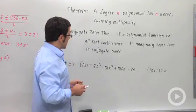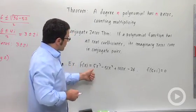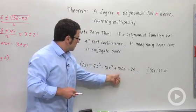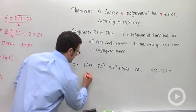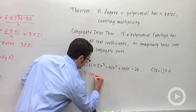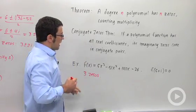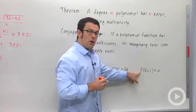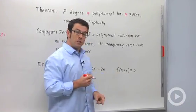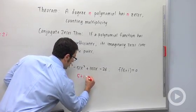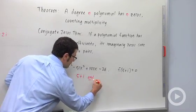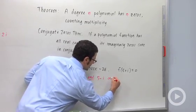So let's take a look at an example. Here I have a third degree polynomial. A degree 3 polynomial by this theorem is going to have three zeros. And if I know that f of 5 plus i equals 0, then I know that 5 plus i and 5 minus i are zeros.